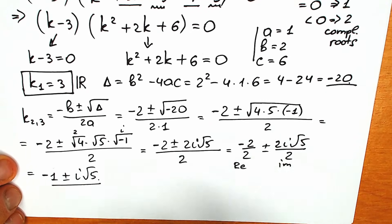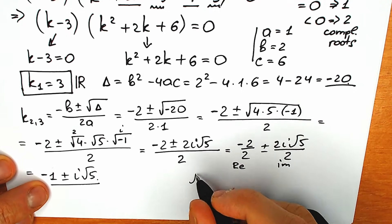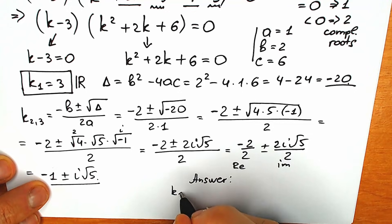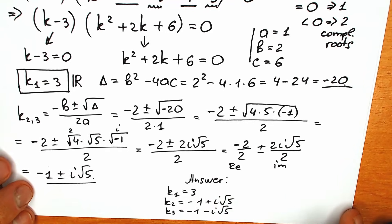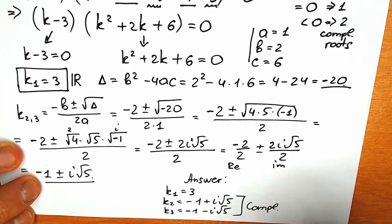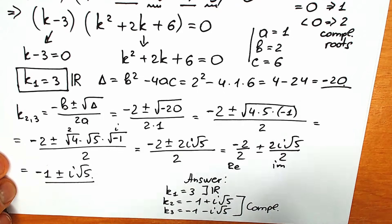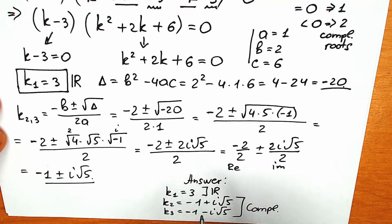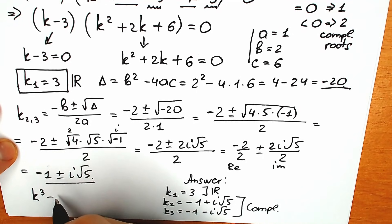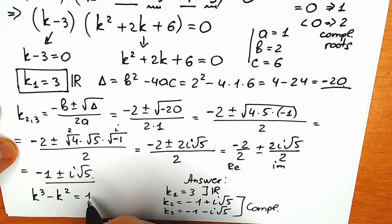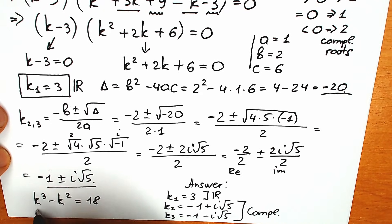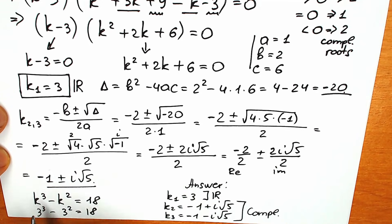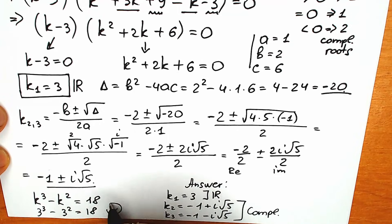So these are our complex roots. Let's gather all roots together and write our final answer. k₁ equals 3, k₂ equals minus 1 plus i√5, and k₃ equals minus 1 minus i√5. The two complex roots and one real root. Let's verify: when k equals 3, we have 3 cubed minus 3 squared equals 27 minus 9 equals 18. Our root is correct.